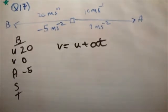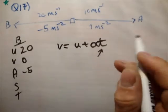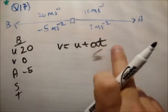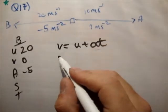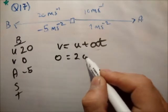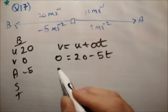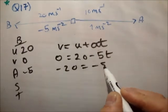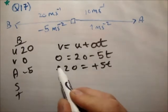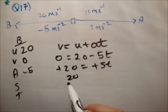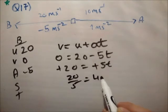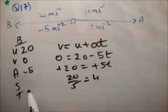If we look at V equals U plus AT, the only unknown is T. So that's one equation, one unknown. So 0 equals 20 minus 5T. 20 equals 5T. 20 over 5 equals T equals 4. So the time is 4 seconds.